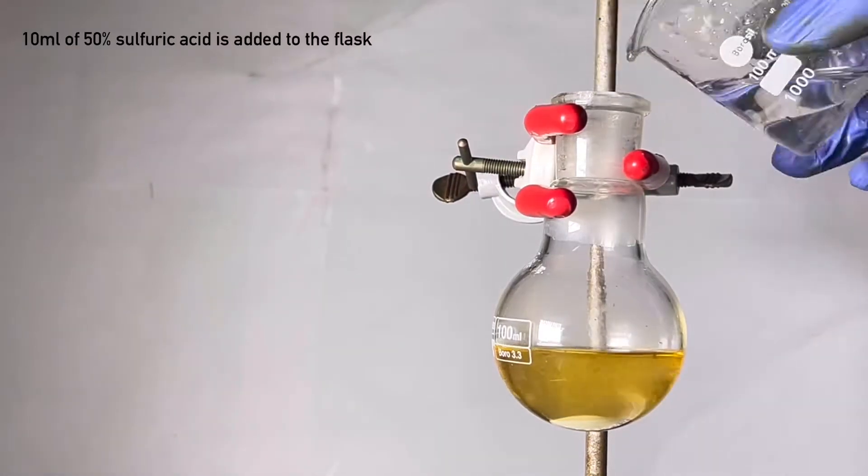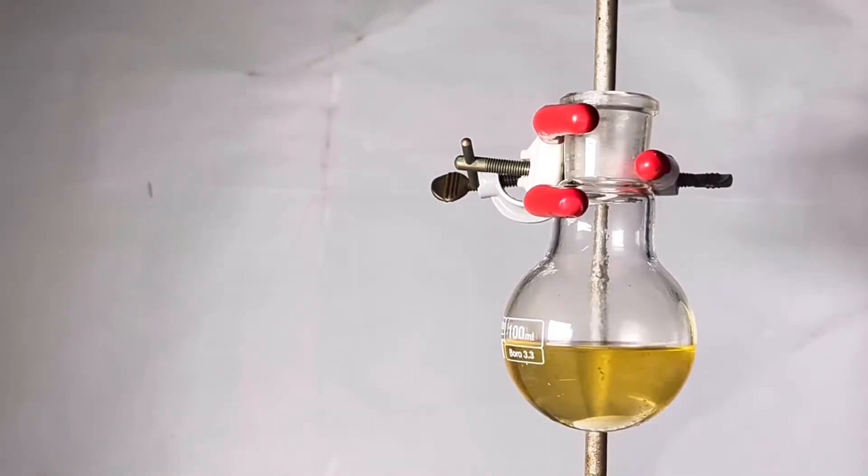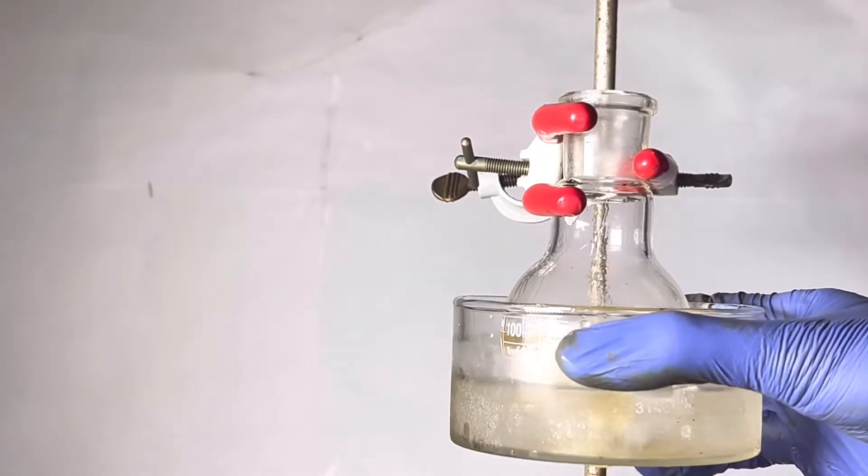Next, we will slowly add 10 milliliters of 50% sulfuric acid. If the temperature becomes very high, an ice bath could be used to bring the temperature down.